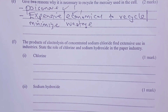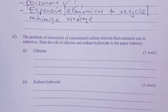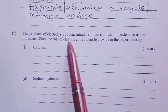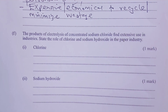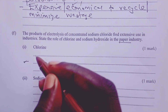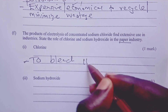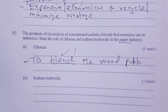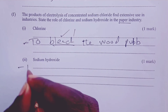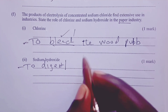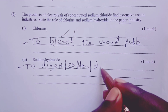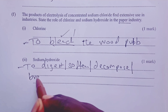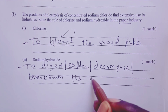Part F: The products of electrolysis of concentrated sodium chloride find extensive use in industries. We are asked to state the role of chlorine and sodium hydroxide in the paper industry. For chlorine, we use it to bleach the wood pulp — bleach earns one mark. For sodium hydroxide, we use it to digest, soften, decompose, or break down the wood pulp — any of those words earns the last mark.